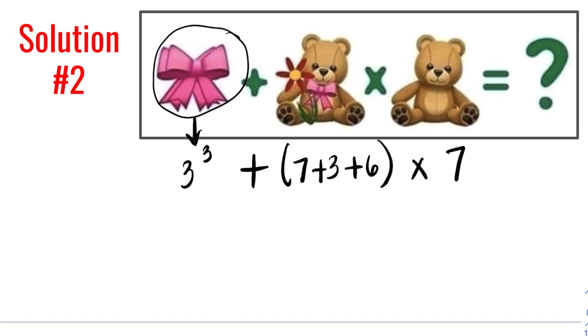because you have a ribbon with a value of 3, to another ribbon with a value of 3. So ribbon to a ribbon, which is 3 to the third power.